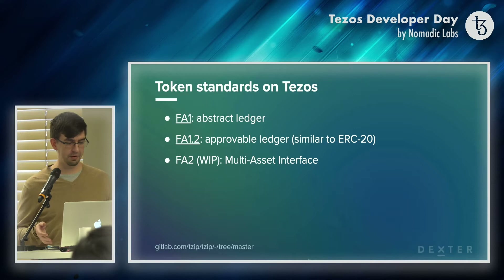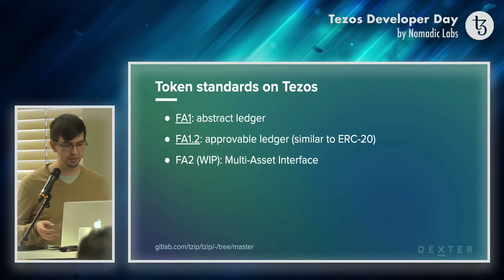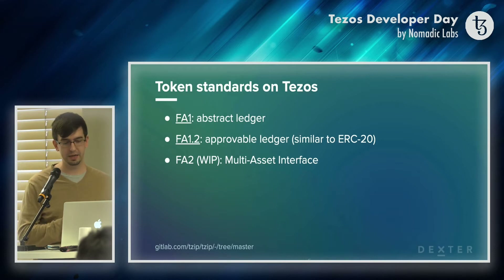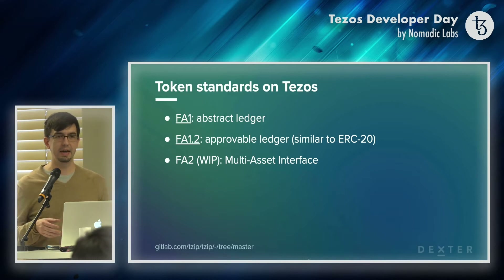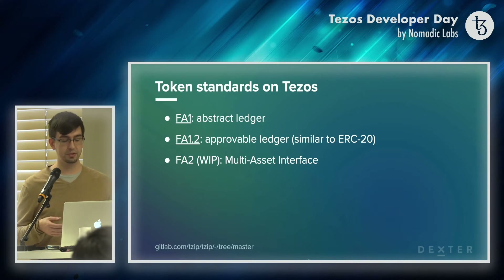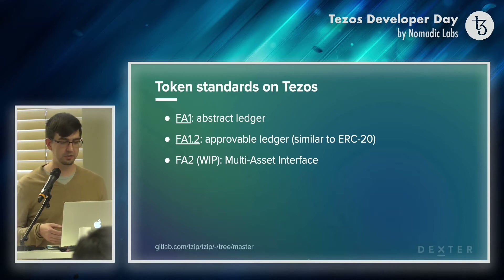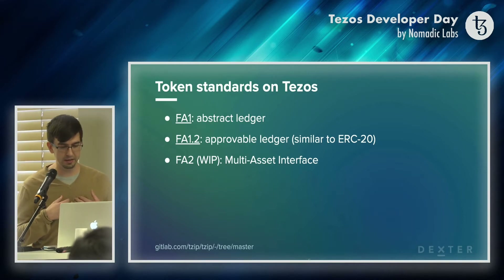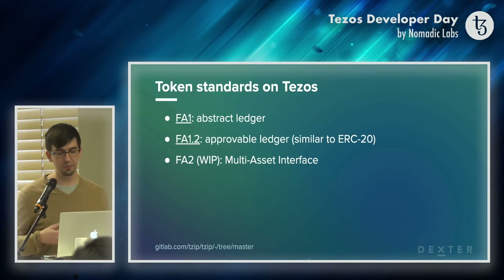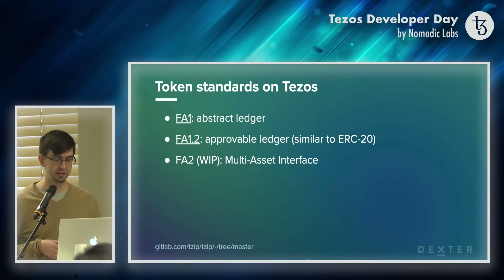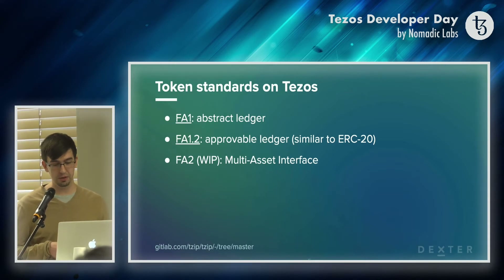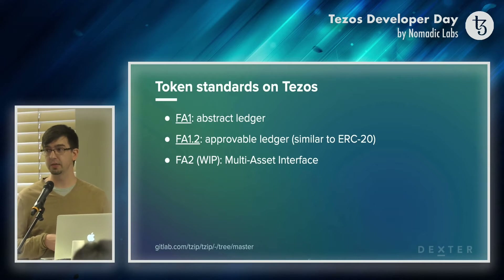Then there's FA1.2. This is a slight improvement of FA1. FA1.2 has the same features plus it has an approvability system. Basically I can give permissions to third parties to use my tokens and I can take away those permissions. So if you are familiar with Ethereum, this is very similar to ERC20.